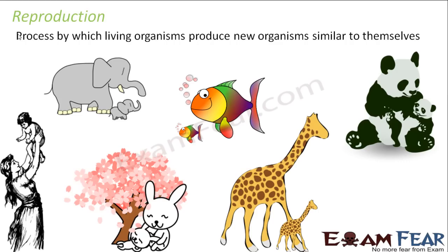The process of reproduction is seen only in living organisms. It is not seen in non-living organisms. We do not see a chair reproducing, or a chair giving birth to a small chair, or a table giving birth to a small table. So no non-living organism can reproduce — only living organisms have the capability to reproduce.